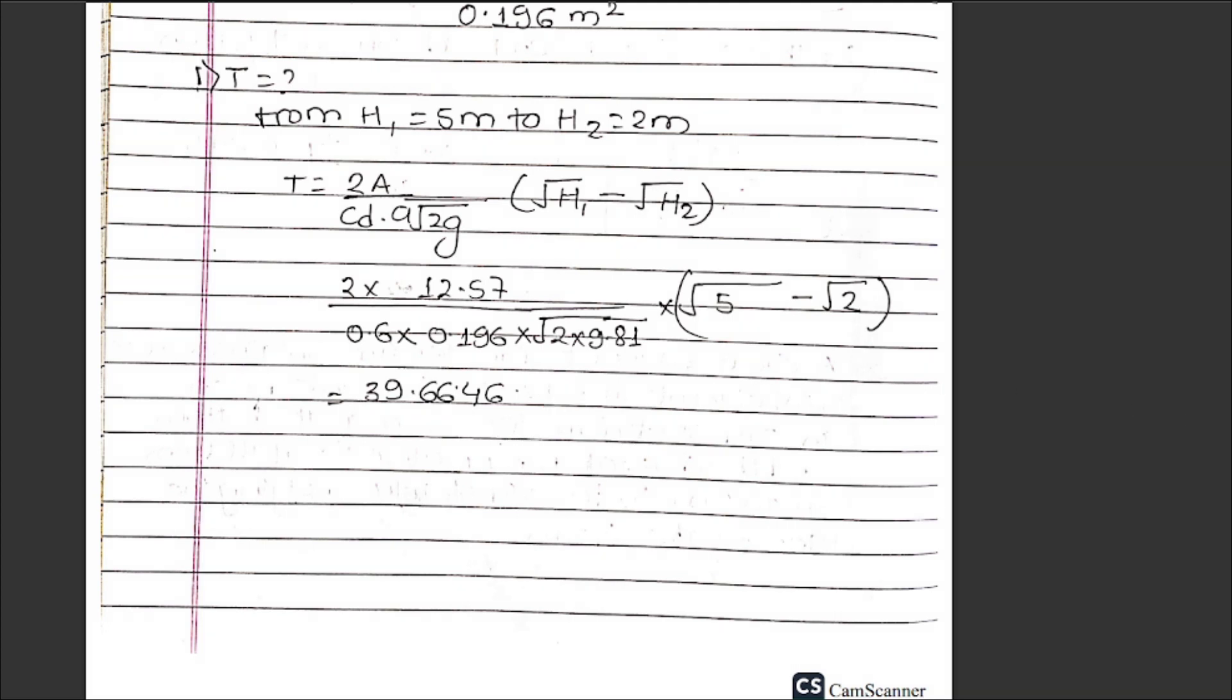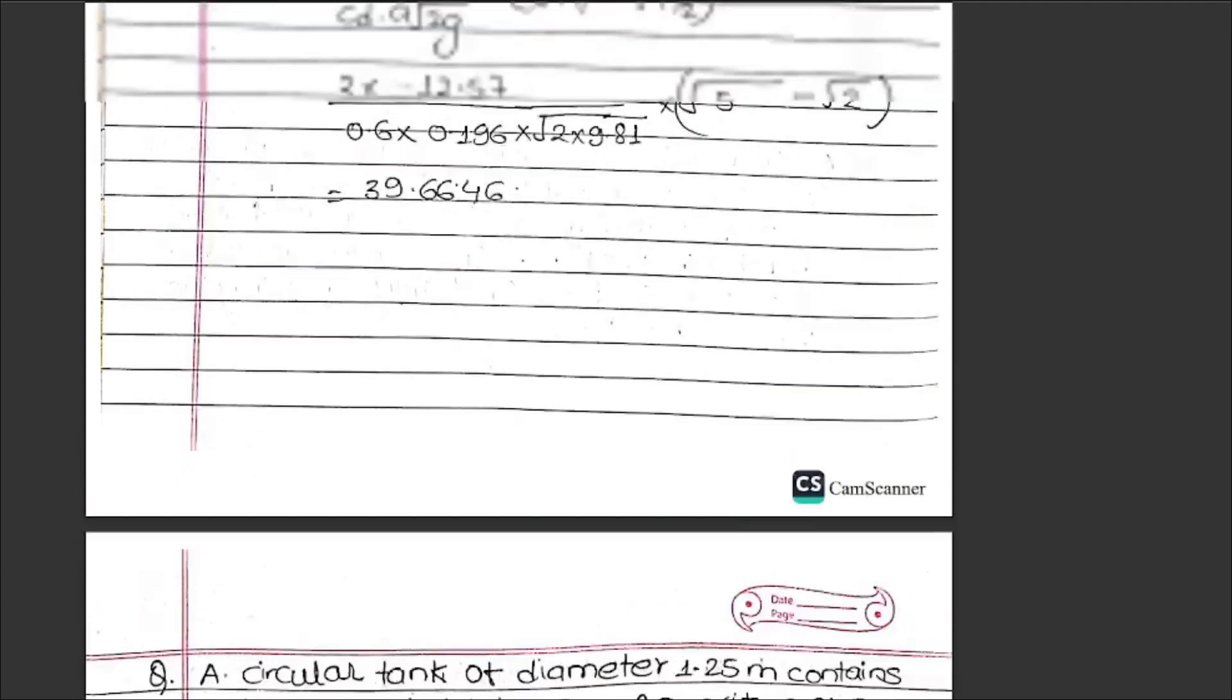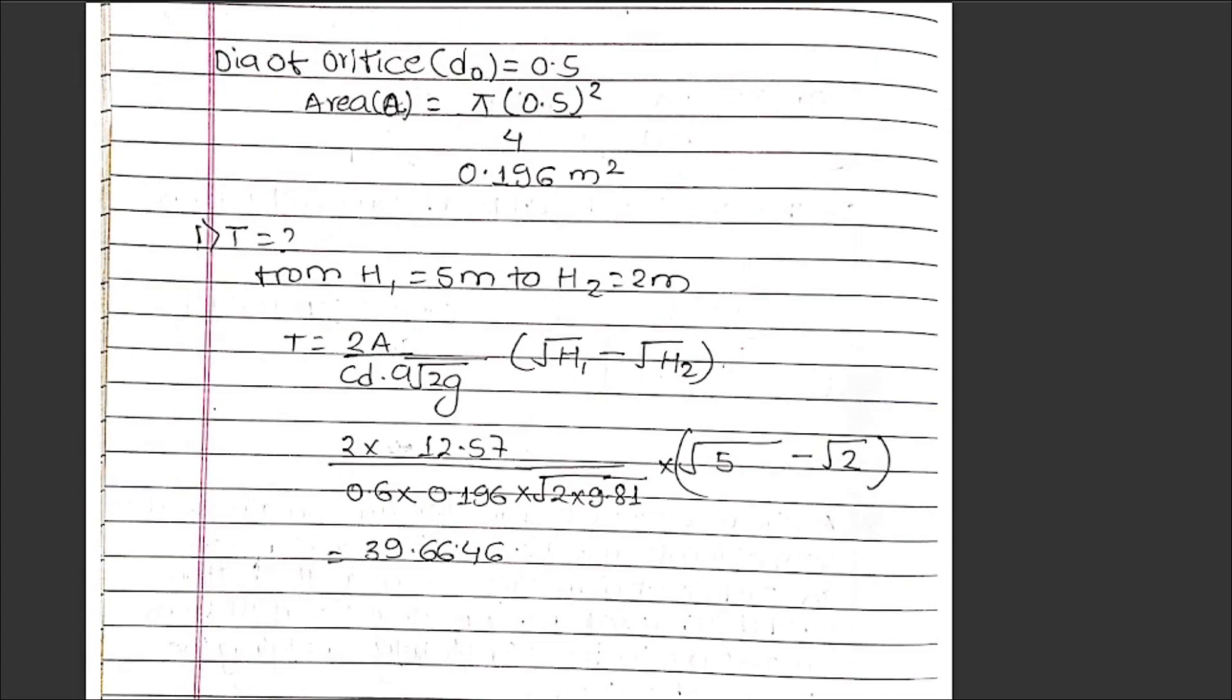Second case: fully emptying. s2 = 0, so the formula becomes simpler. Using the same parameters, we calculate the time for the tank to fully empty.